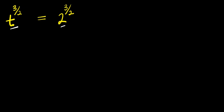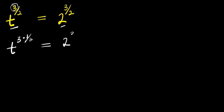Now we can factor out the exponent from here. We have t to the power 3 times 1 over 2, and this equals 2 to the power 3 times 1 over 2.